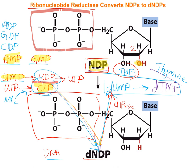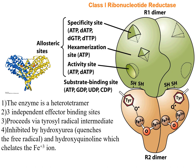Ribonucleotide reductase only works on the nucleotide diphosphorylated form. There are different classes — we'll focus on the class 1 ribonucleotide reductase, generally found in higher-level organisms as well as E. coli. Class 3 is found in anaerobic microorganisms, which we won't focus on. The enzyme is heavily complicated — it exists as an R1 dimer joined with an R2 dimer, forming a heterotetramer.